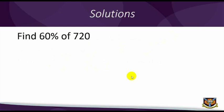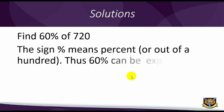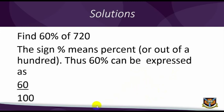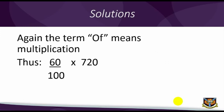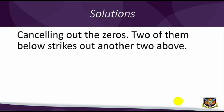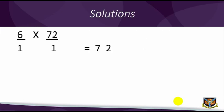Find 60% of 720. The sign percent means per cent or out of a hundred. Thus, 60% can be expressed as 60 over 100. Again, the term of means multiplication. Thus, 60 over 100 times 720. Cancelling out the zeros, two of them below strikes out another two above. 6 over 1 times 72 over 1 is equal to 72 times 6 is equal to 432.